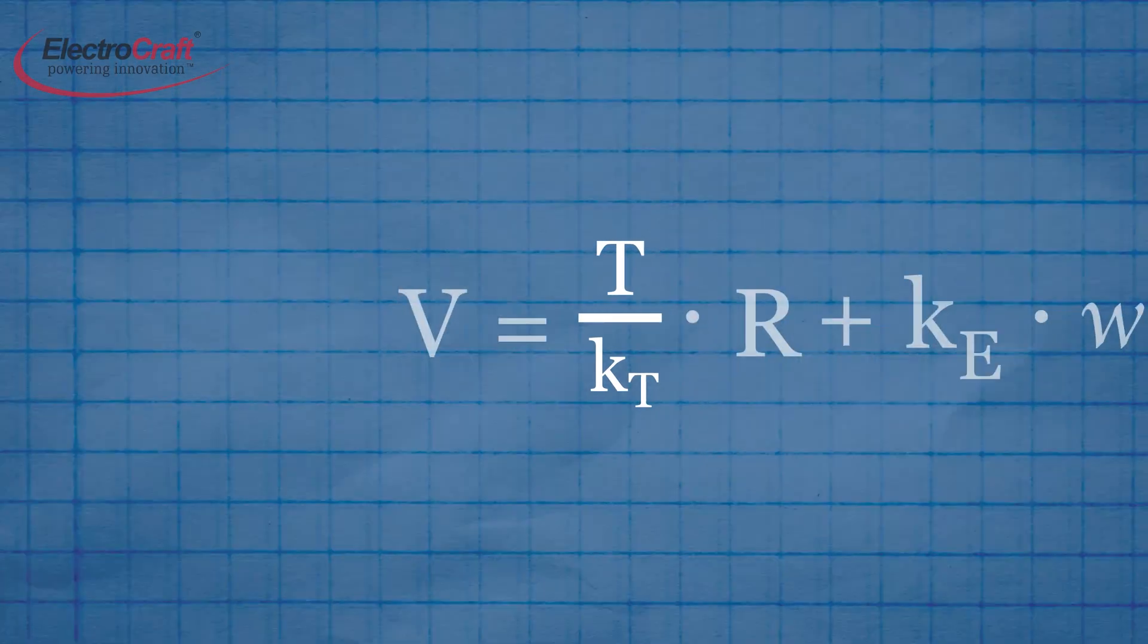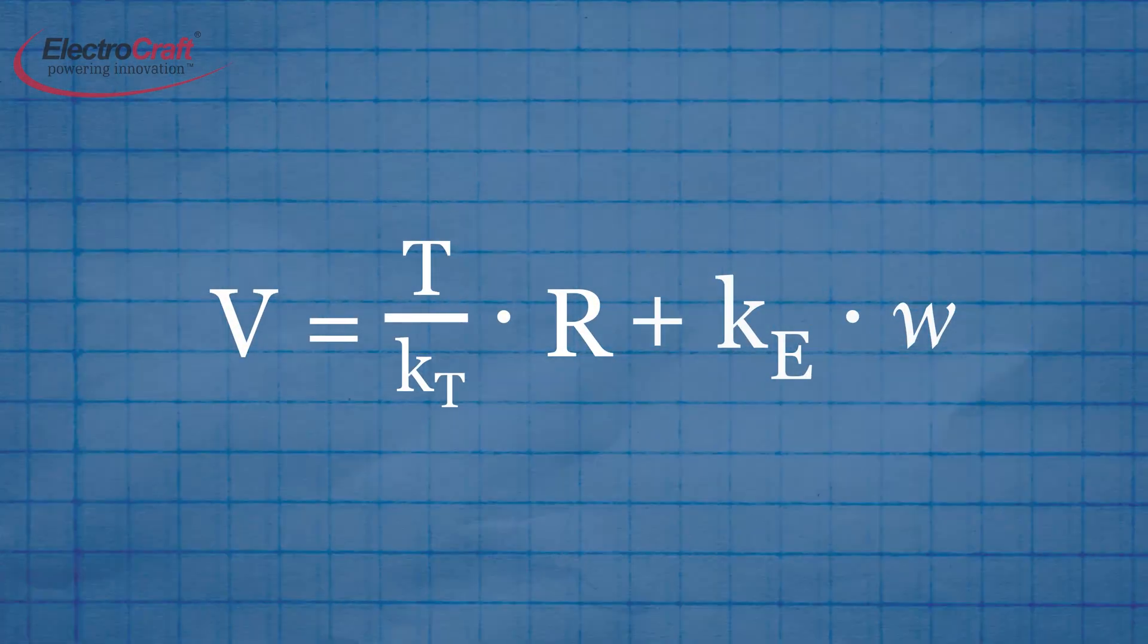Now, substituting I in the voltage equation gives us a new voltage equation that shows the relationships between voltage, angular velocity, and torque.